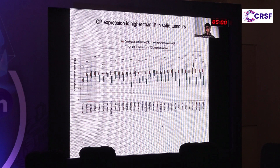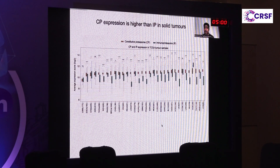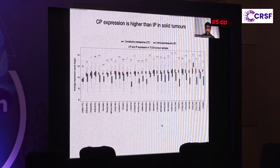Looking at expression levels on the y-axis across different tumor types on the x-axis, we could see broadly that constitutive proteasome, highlighted in the brown box plot, is higher compared to immunoproteasome. The interquartile range of the constitutive proteasome is very small, meaning its expression is consistent across tumor types, whereas the immunoproteasome expression is highly variable, represented by a larger interquartile range.